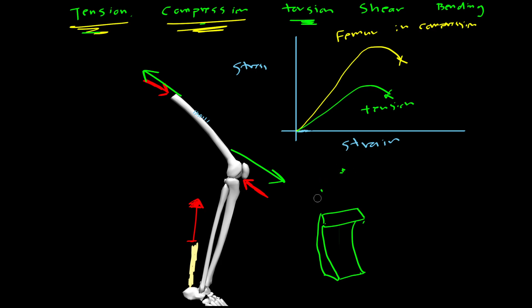Shear happens when you have, technically it happens when you have compression forces that are offset from each other. So let's redraw a little box. And if you applied a force like this and a force like this directly on the opposite side, you'd be compressing it in this direction, right?